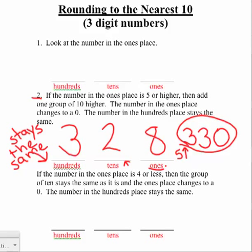Now, if I'm rounding to the nearest ten with a three-digit number and the number in the ones place is 4 or less, let me show you what to do. The example I'm going to use is the number 434.